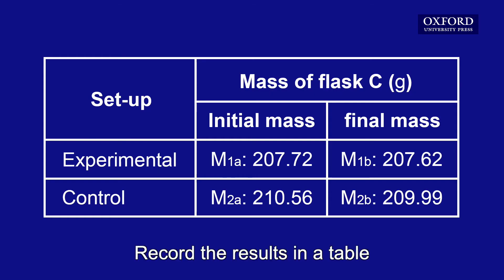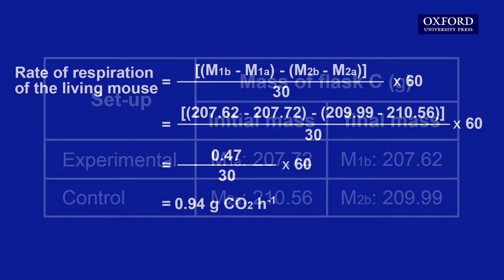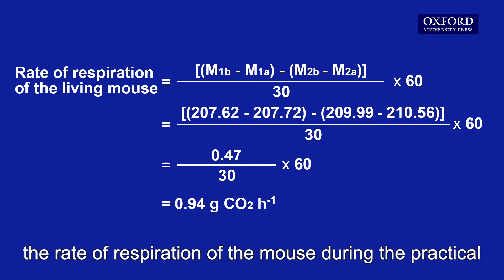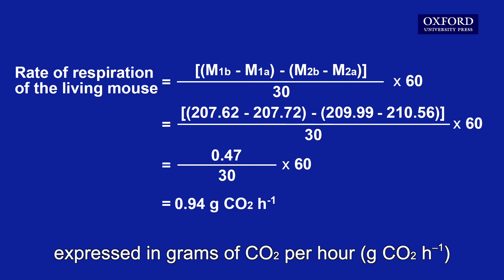Record the results in a table. Use this formula to calculate the rate of respiration of the mouse during the practical, expressed in grams of carbon dioxide per hour.